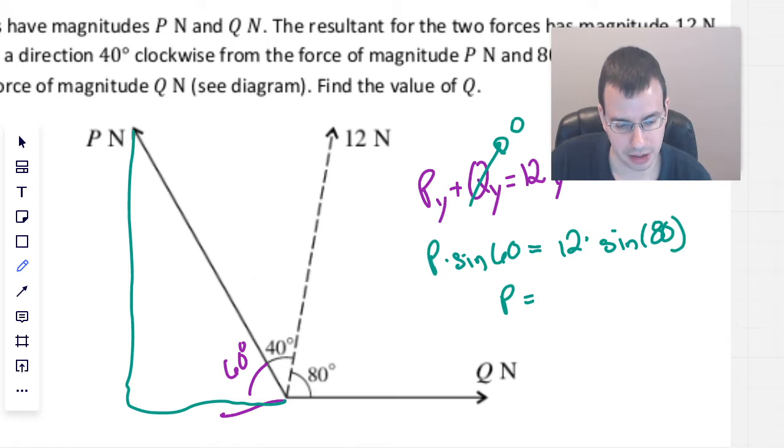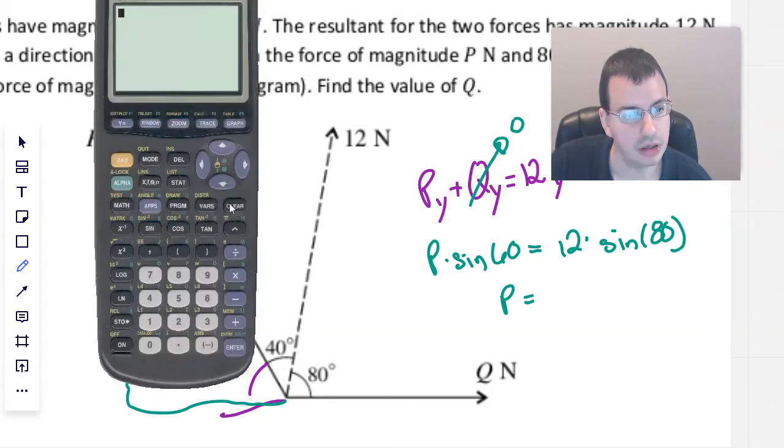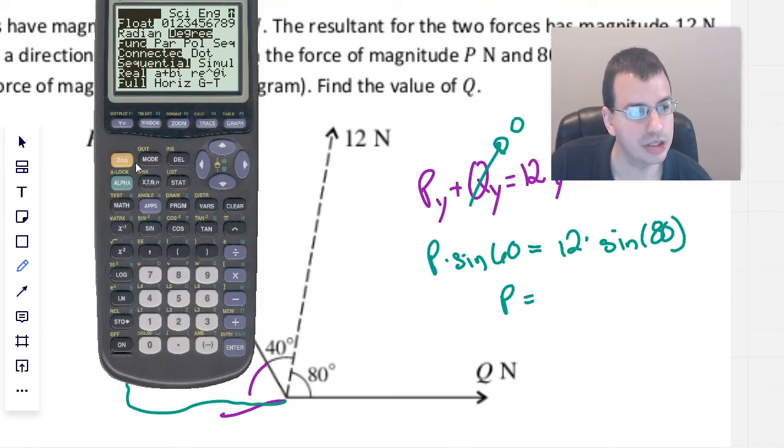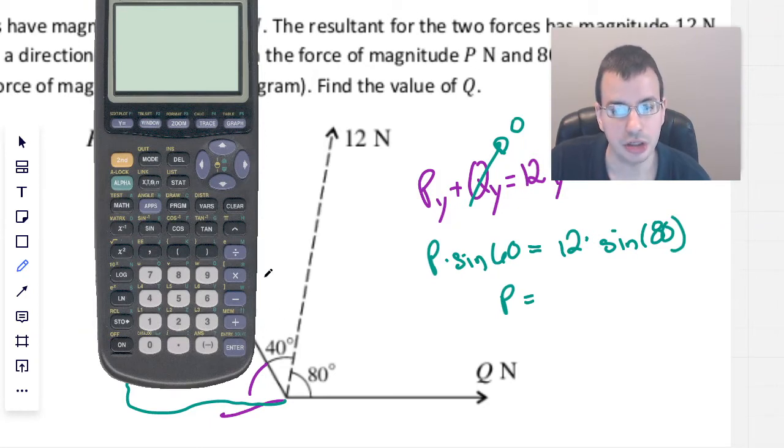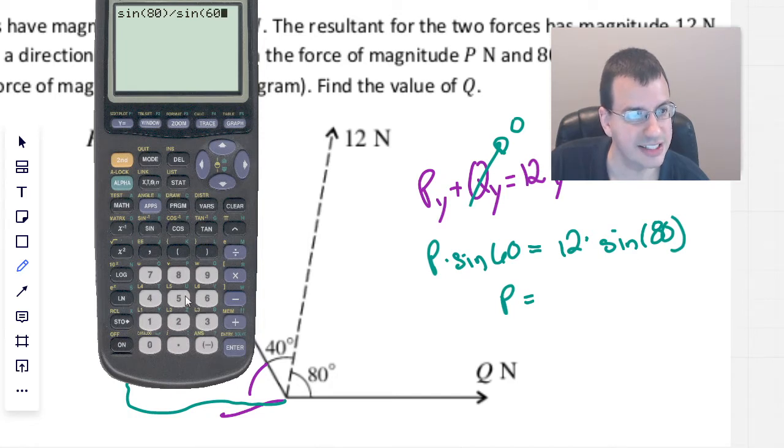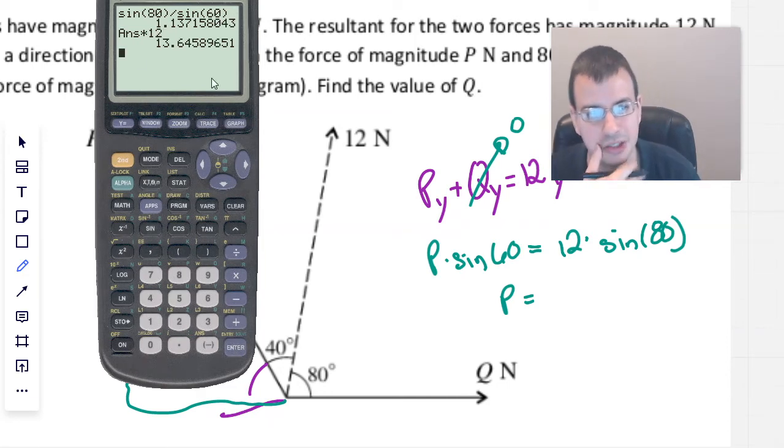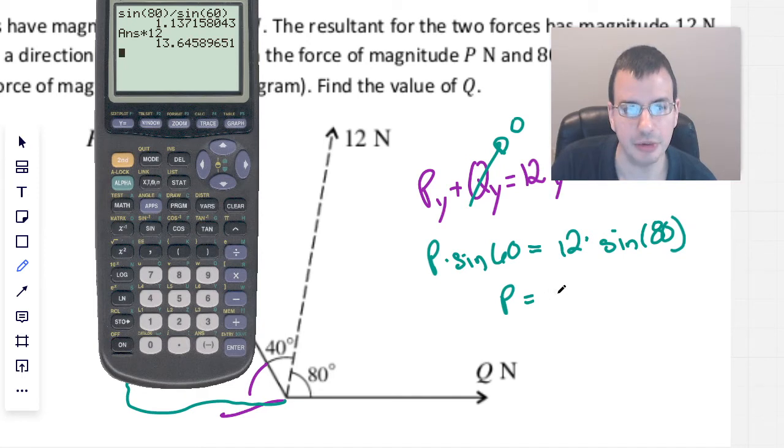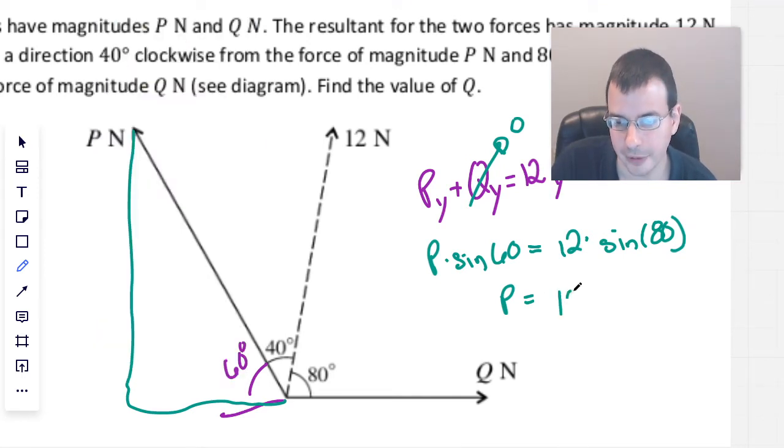That'll be P times sine of 60 equals 12 times sine of 80. So we can solve for P. Clear, mode, we're in degrees, excellent. So we'll do sine of 80 divided by sine of 60 times 12, we get 13.645, okay, 13.65 Newtons.